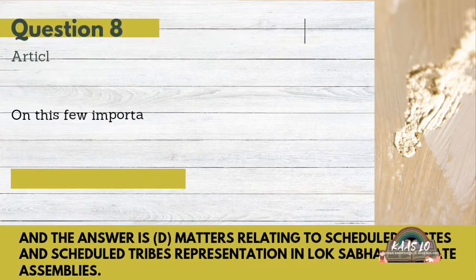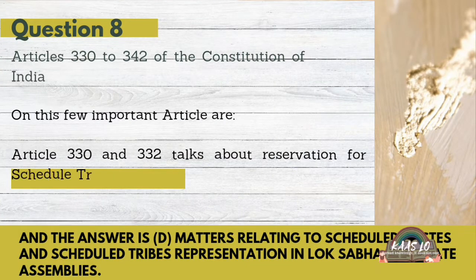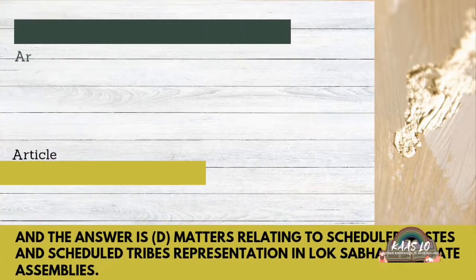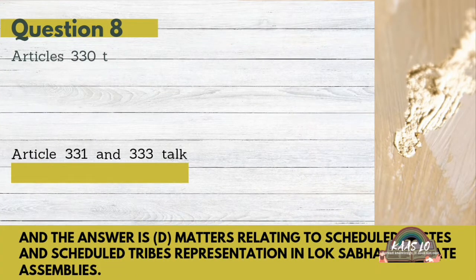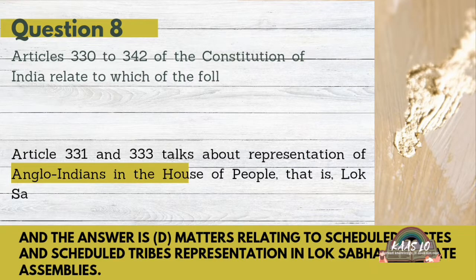On this, a few important articles: Articles 330 and 332 talk about reservation for Scheduled Castes and Scheduled Tribes in the House of People, i.e., Lok Sabha. Articles 331 and 333 talk about representation of Anglo-Indians in the House of People, i.e., Lok Sabha.